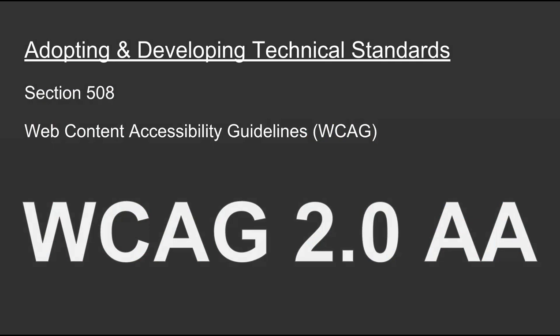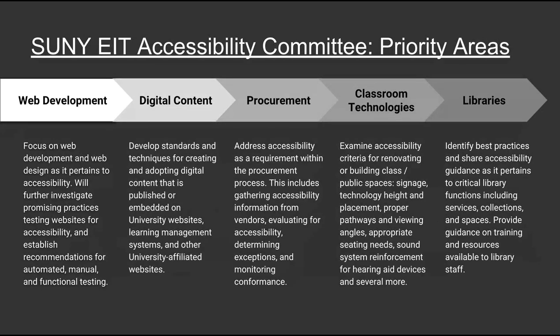Some of you may be familiar with Section 508. As it stands, this standard only applies to federal entities — some states have adopted it, but it's not typical for colleges. What colleges and universities typically adopt is the Web Content Accessibility Guidelines (WCAG) 2.0 AA. This is an international standard with three levels: A, AA, and AAA. Adopting AA means you've also adopted A. Level A is a more baseline level, AA is intermediate, and AAA is advanced. At SUNY, we did not explicitly adopt either of those standards.